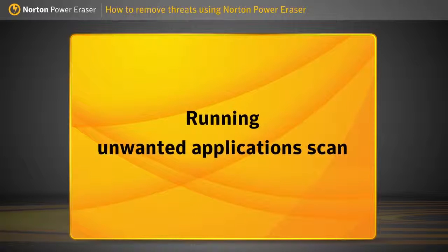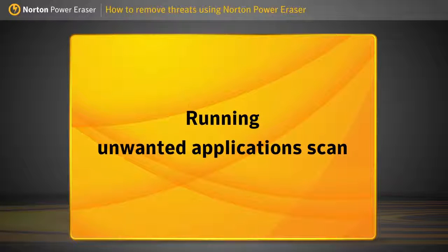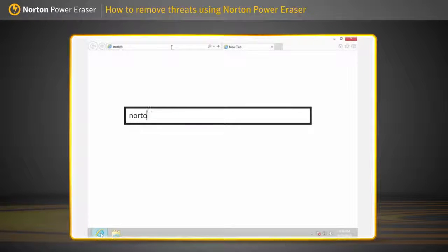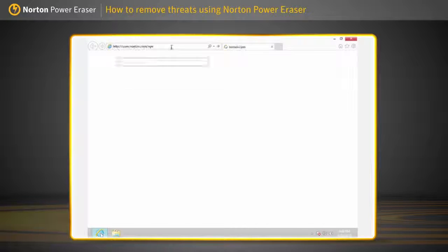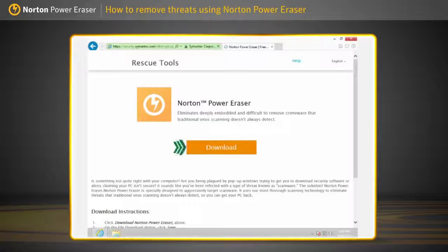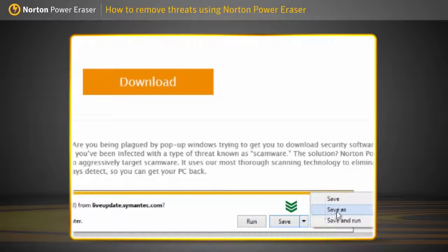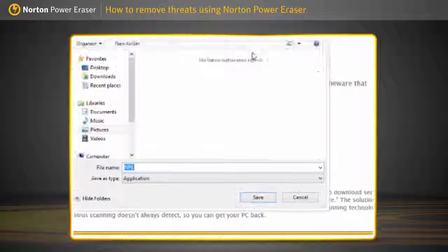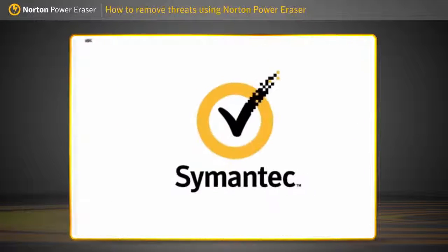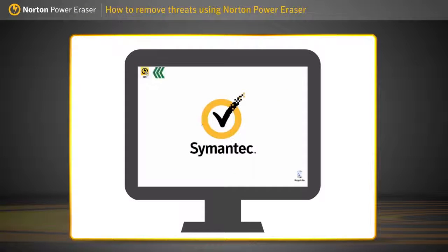Let's see how to run the unwanted application scan using Norton Power Eraser. Go to norton.com/NPE. Click Download. Save the file to the desktop and double-click it.